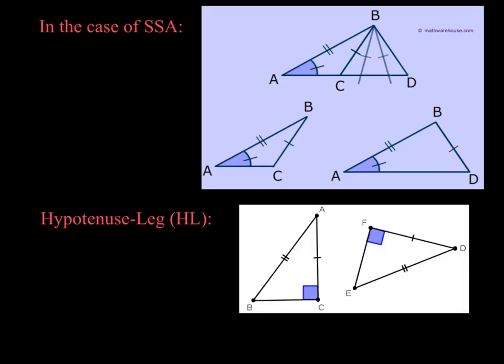One last note: I want to revisit the legal shortcut called hypotenuse-leg. You can see that we have the right angle, a pair of sides, and then the hypotenuses — so this is a hypotenuse-leg in each of the two triangles, making it a legal shortcut. Notice it can also have the appearance of side-side-angle, but hypotenuse-leg is the only exception to the side-side-angle case.